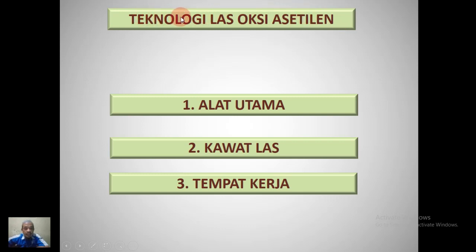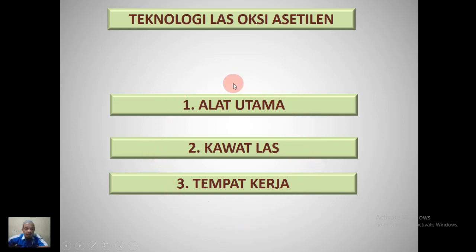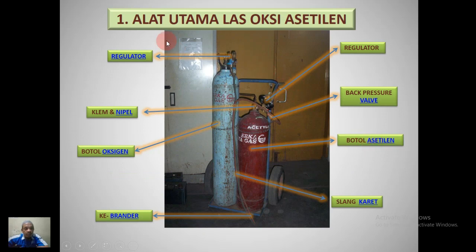Yang akan saya bahas hari ini ada tiga macam. Yang pertama adalah alat utama. Yang kedua adalah kawat las, ini sebagai bahan tambah saat pengelasan. Yang ketiga adalah tempat. Dari ketiga ini tidak bisa dipisahkan, sesuai dengan judul materinya yaitu teknologi las oksi asetilin. Jadi ketiganya harus ada. Yang pertama, alat utama las oksi asetilin. Alat utama ini harus ada.